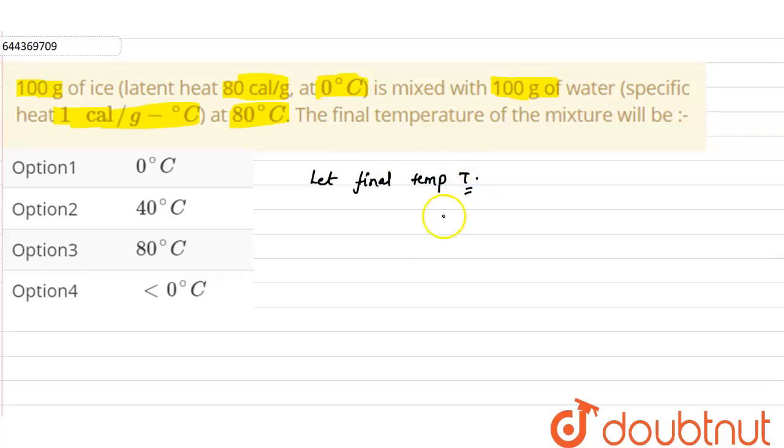So at final temperature T, what happens is the heat lost by the water will be equal to the heat gained by the ice. Heat lost by water equals heat gained by ice.